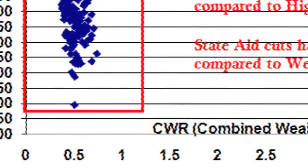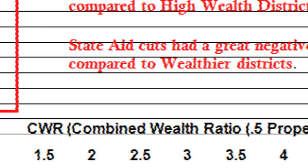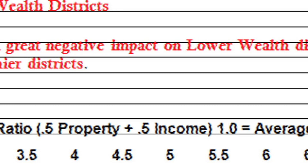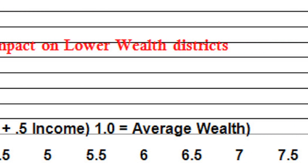Then they take another part of the formula and do the same thing with property values. When the assessor submits property levies and data to ORPS, they can add up all the property values in your school district and compare how wealthy your district is in terms of property values compared to the state average. You add these two together and they come up with what they call the combined wealth ratio — combining income and property. A district with a ratio of one is therefore equal to the average.